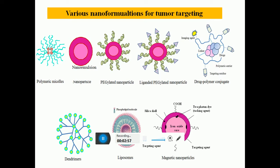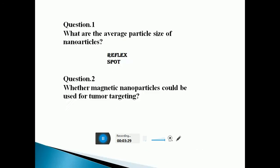There are various approaches through which we can target cancer or tumor sites. These approaches include polymeric micelles, nano-emulsions, nanoparticles, PEGylated nanoparticles, ligand-PEGylated nanoparticles, drug-polymer conjugates, dendrimers, liposomes, including magnetic nanoparticles, and many more nano-based approaches that can selectively target cancer.